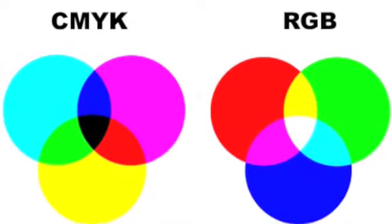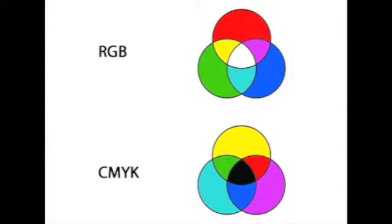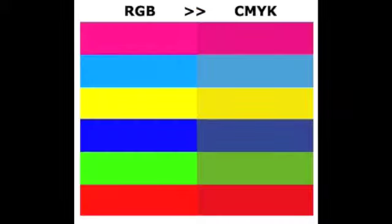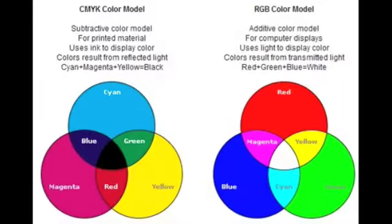First, let's contrast RGB with CMYK. Both are acronyms for the primary colors used in each profile. RGB stands for red, green, and blue. CMYK stands for cyan, magenta, yellow, and black. Both of these methods use their respective primary colors to create the effect of a full spectrum of color, so the term full color is often used to describe both formats.